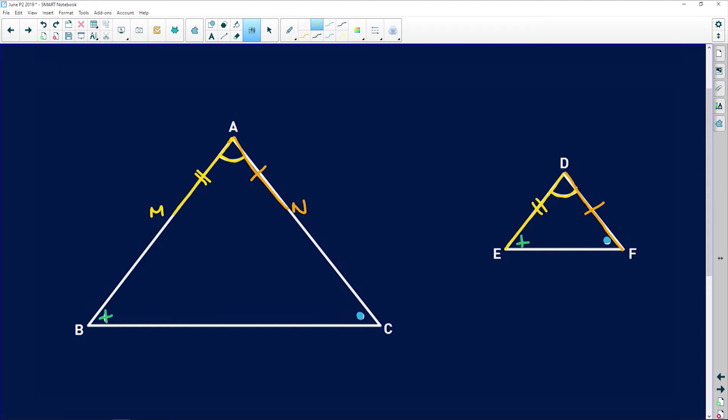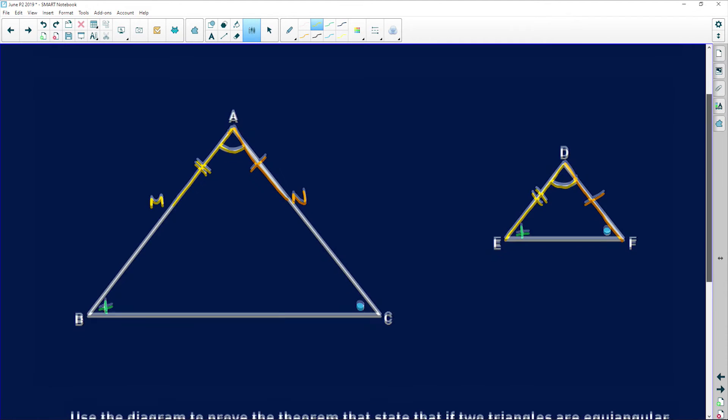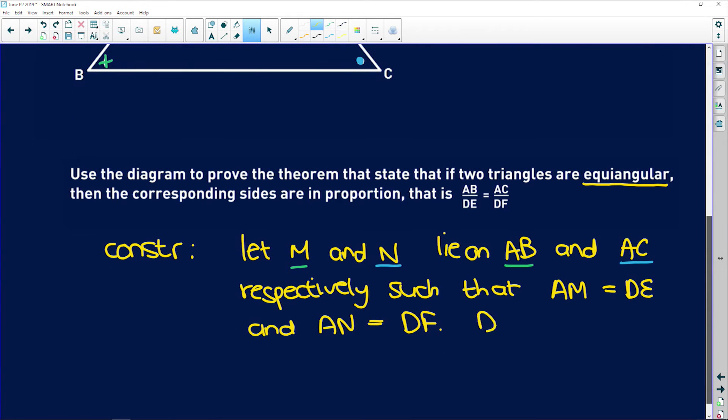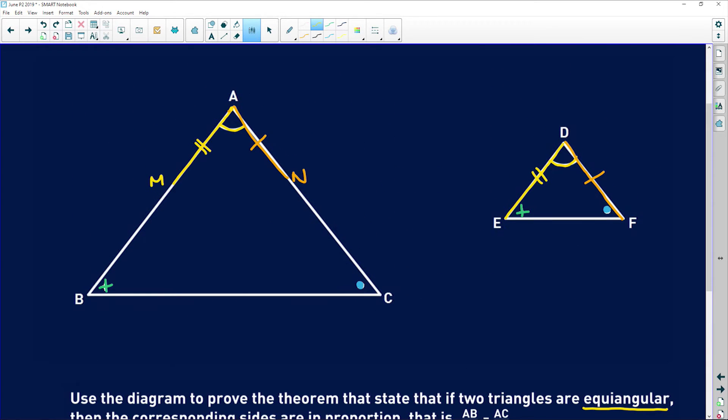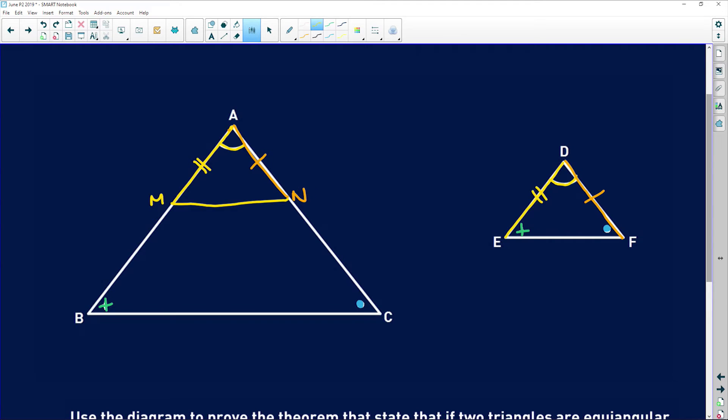By construction, make that situation happen. And then you can say draw MN. So up here, you're going to just join these two. So now we know that we have a pair of sides that is equal, an included angle that is equal, and another pair of sides that is equal.